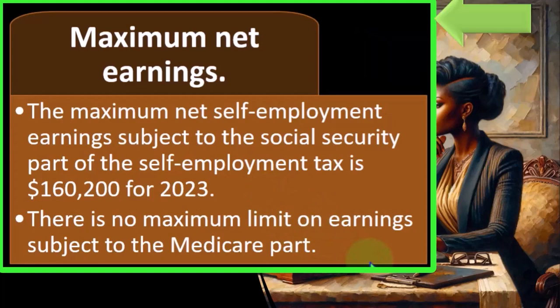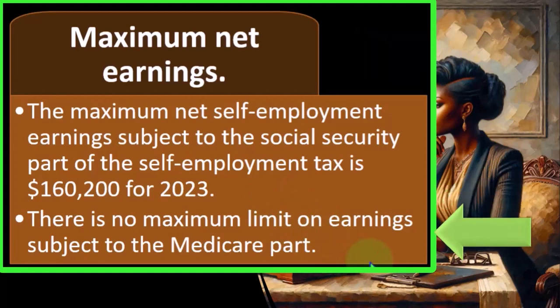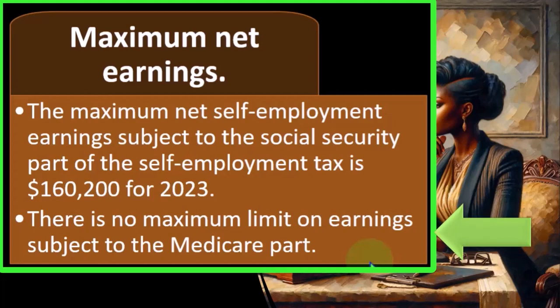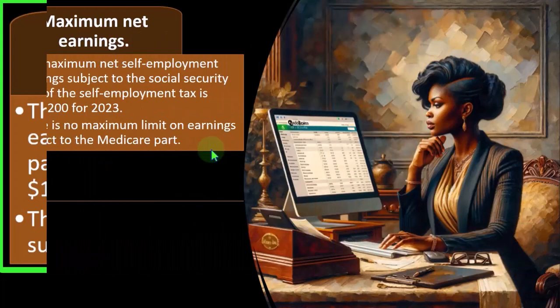There's no maximum limit on earnings subject to the Medicare part. The Medicare part — you can tell by the fact that it's a much lower tax rate — is designed more as a safety net program, which kind of makes sense.